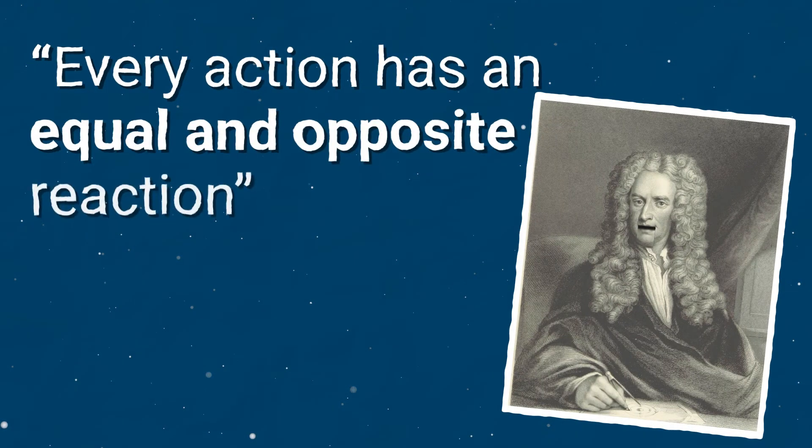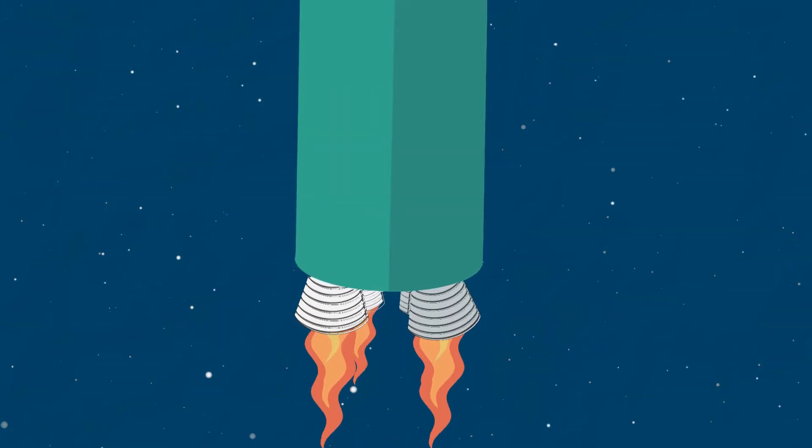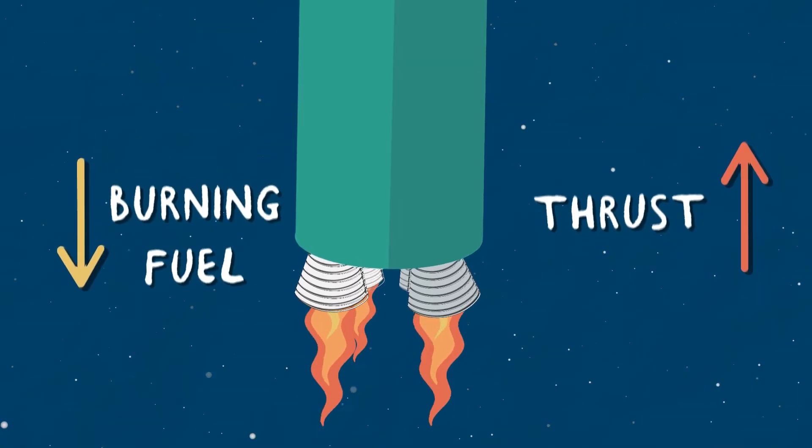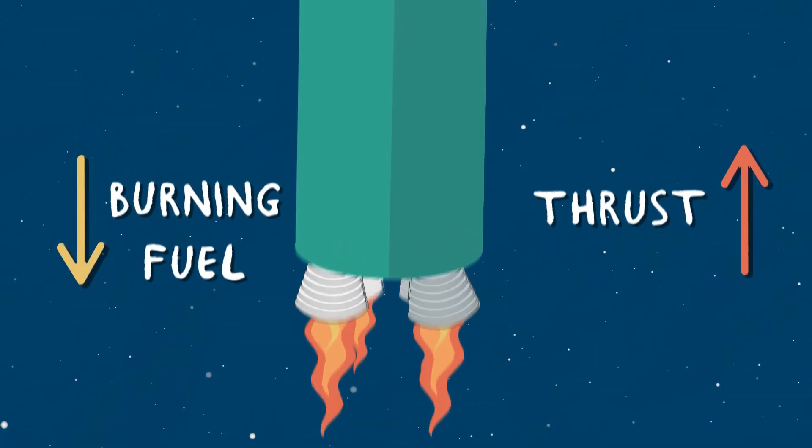Every action must have an equal and opposite reaction. So when the propulsion system fires, burning massive amounts of fuel and expelling the burning gas, it generates thrust in the opposite direction, which lifts the rocket off the ground.